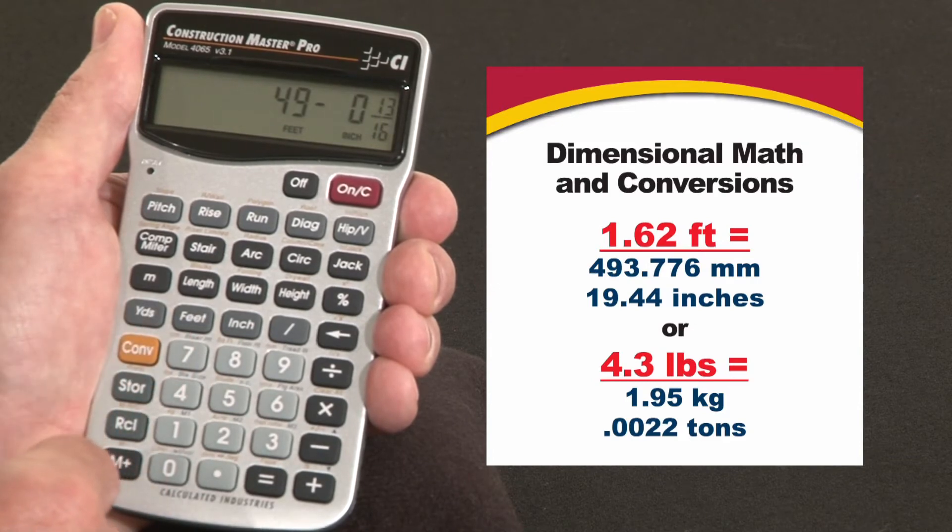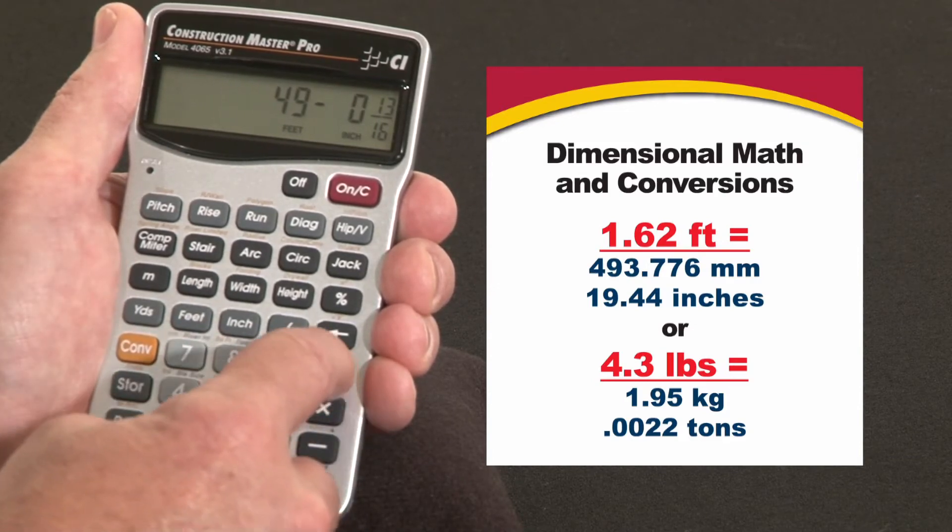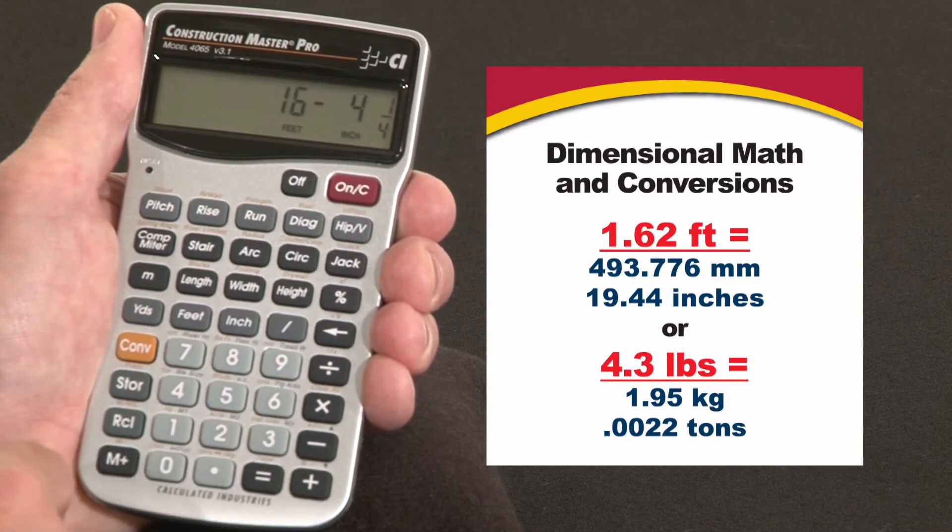So now you can add, subtract, multiply or divide these. Let's say we want to divide that by three for equal spacing. Divide by three equals sixteen four and a quarter.